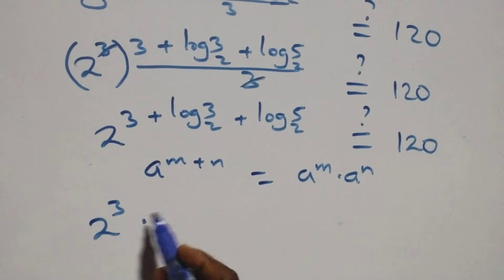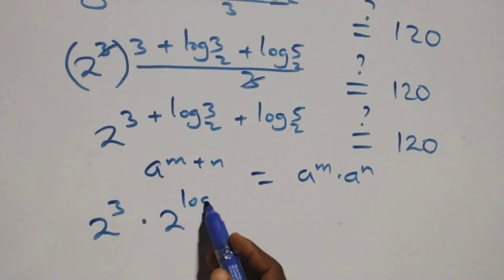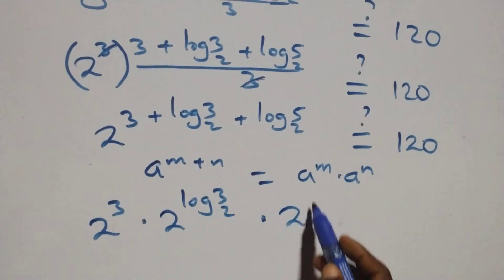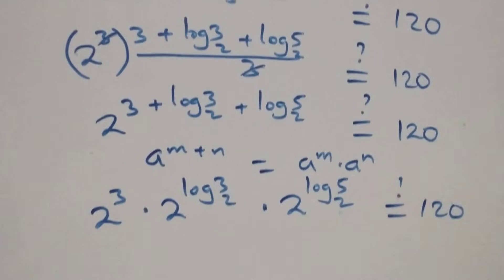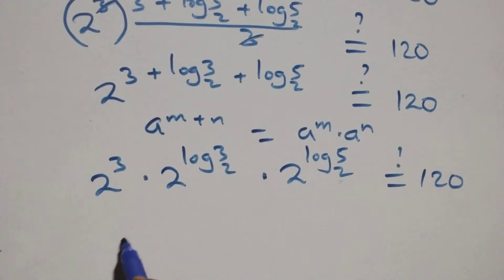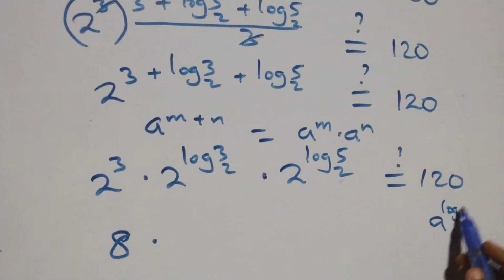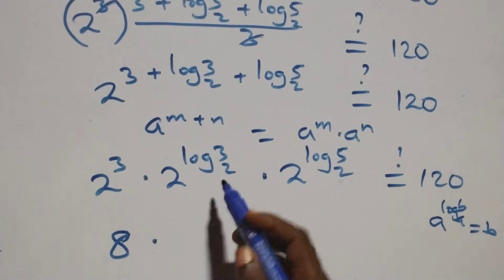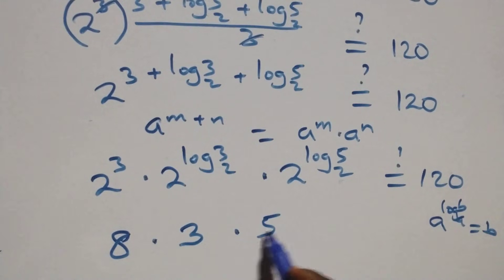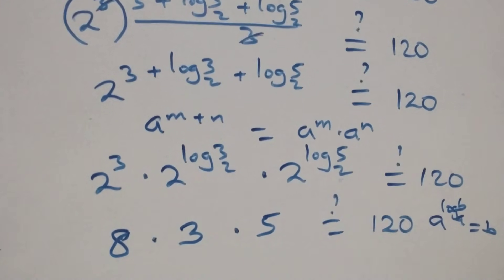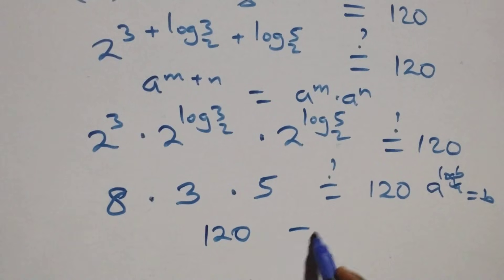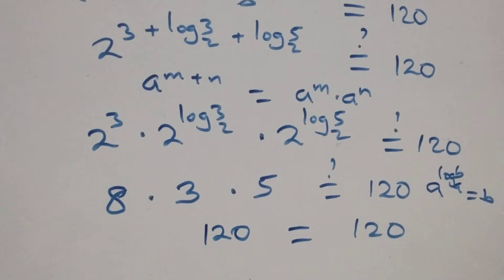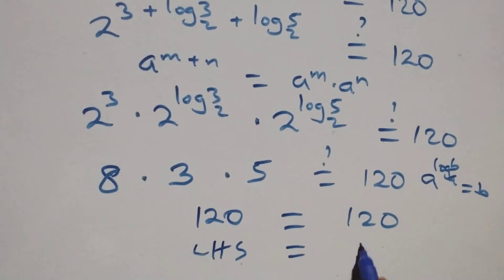We have 2 raised to power 3, times 2 raised to power log₂3, times 2 raised to power log₂5, which should equal 120. Now 2 raised to power 3 equals 8. Using the identity a raised to power log_a(b) equals b, we get 8 times 3 times 5. That gives us 8 times 3 equals 24, and 24 times 5 equals 120, which equals 120 on the right hand side. The left hand side equals the right hand side — verified!